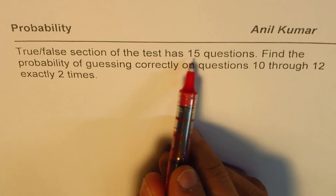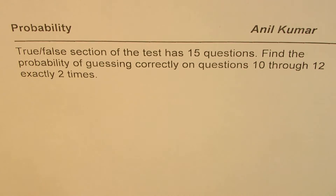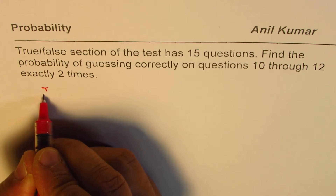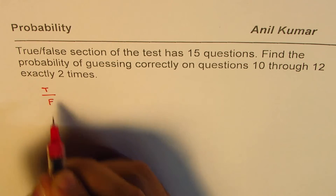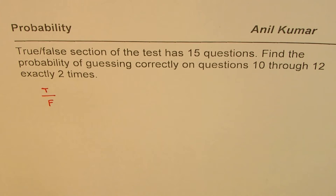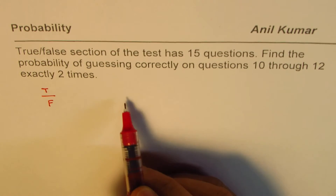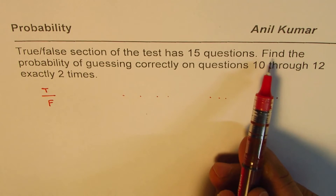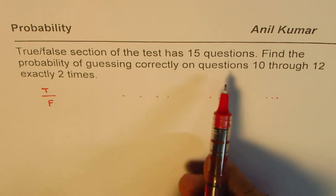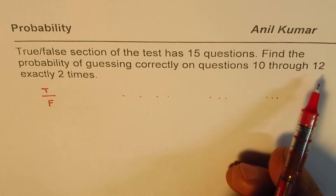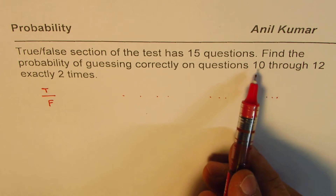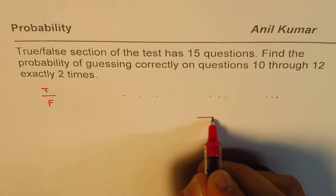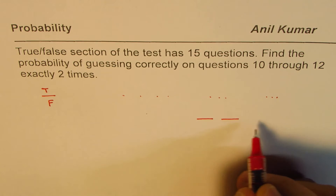Let us see how to solve such questions. It says true/false section of a test — that means for every question there are two choices: true or false. The answer could be either true or false. The test has 15 questions in all. We are most interested in questions 10 through 12 — let's say question 10, 11, and 12.